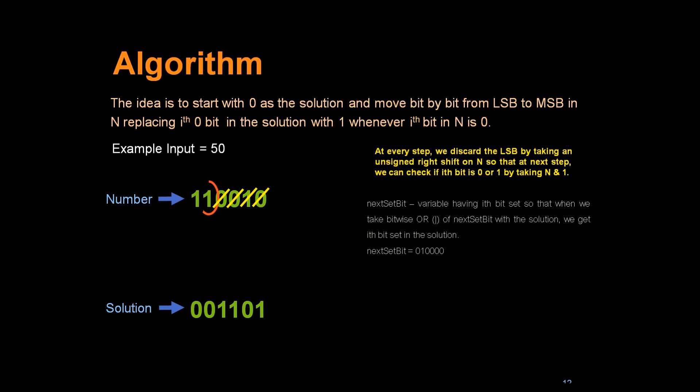We will go to the next bit which is 1. Is 1 equal to 0? No, this is not 0. So what we will do, we will just keep 0 as it is. Basically we will not do any operation here.